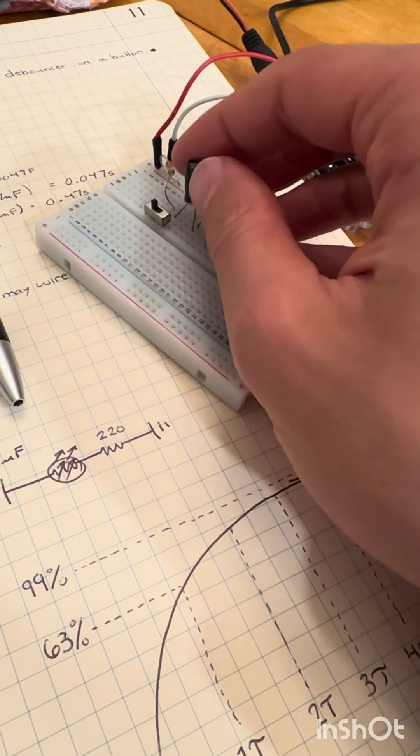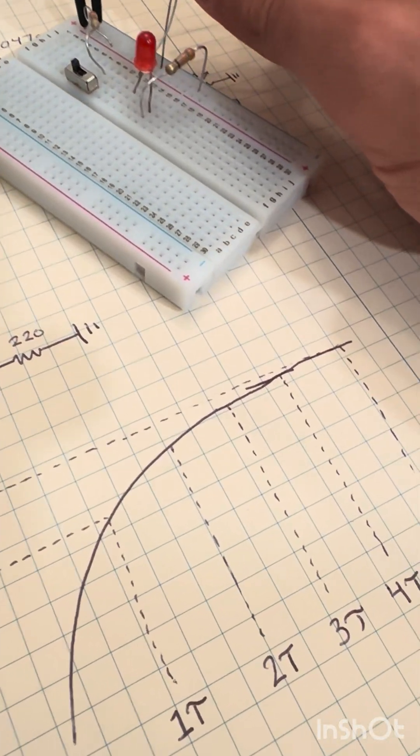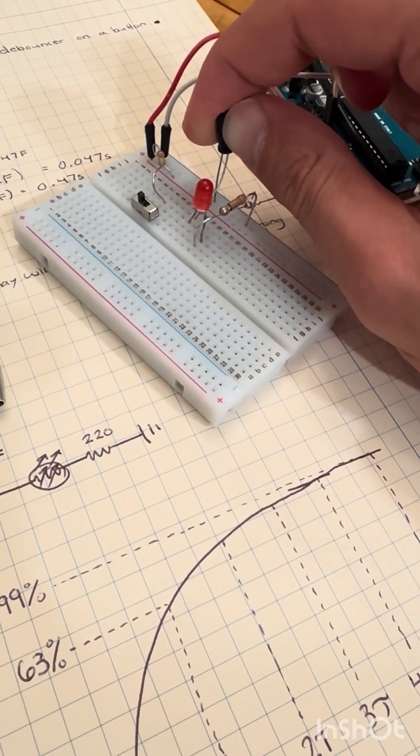However, when we turn the switch off, the capacitor isn't discharging because it's in an open loop. When we close the loop, we'll notice it will discharge and turn the LED on.